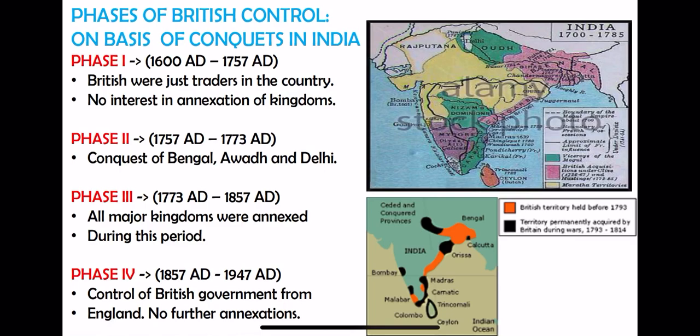From 1757 to 1773, they got a chance to conquer Bengal, and along with Bengal, Awadh and Delhi came to them for free. So in the second phase, from 1757 onwards, for the first time they left trade — which was their main forte — and started the process of annexation in India. Under that, they first conquered Bengal, Awadh and Delhi. The third phase was the most important phase with respect to British conquest in India, in which maximum kingdoms were conquered.